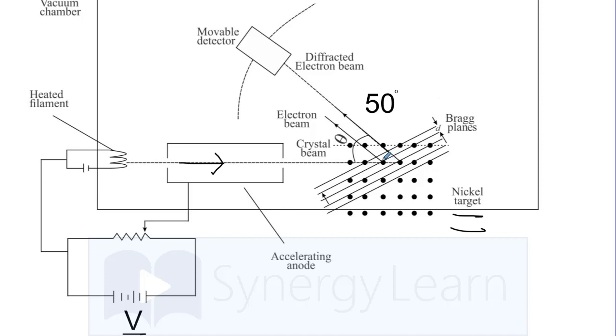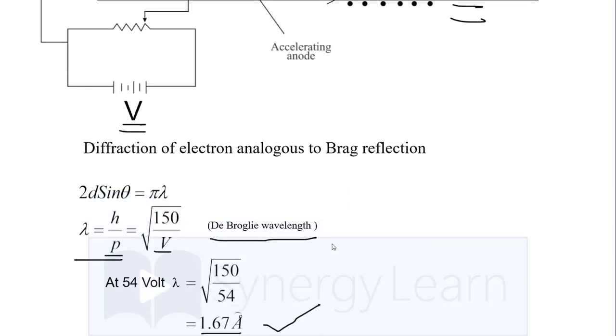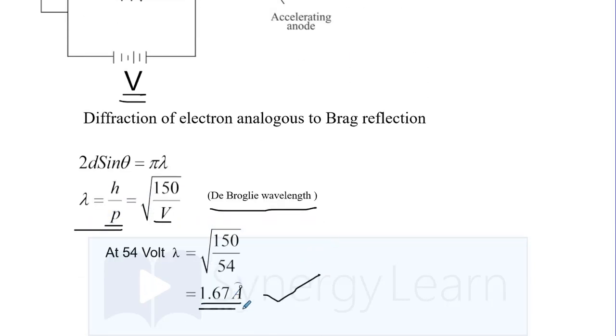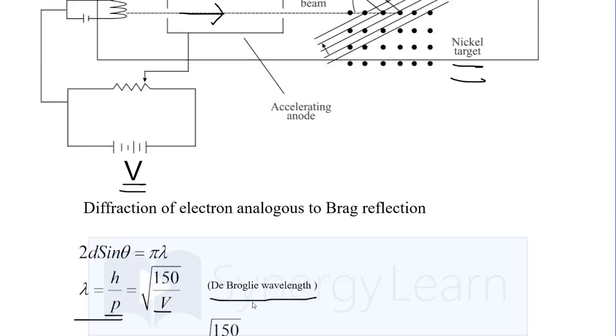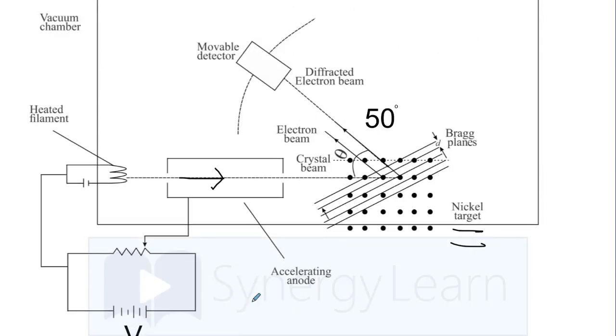There is some reasoning behind it because the wavelength which theoretically we have obtained is 1.67 angstrom, which is closer to x-rays. X-rays do good diffraction with crystals because the space between inter-atomic layers is of order of few angstroms. Going by the similarity that like x-rays, electrons should also show diffraction.